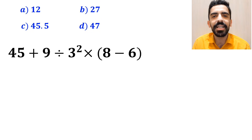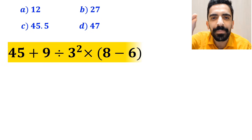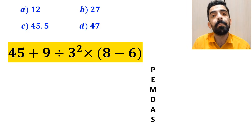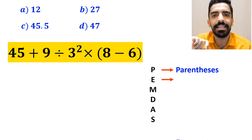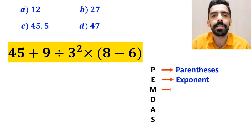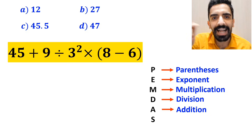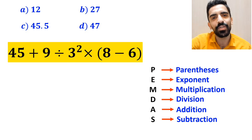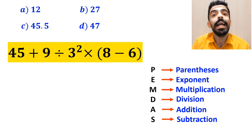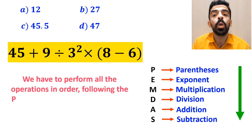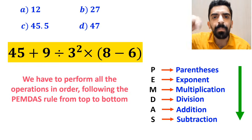Now let me explain step by step how to solve this expression properly. To solve this question, we must follow the PEMDAS rule step by step. In this rule: P stands for Parentheses, E stands for Exponent, M stands for Multiplication, D stands for Division, A stands for Addition, and S stands for Subtraction. It means we have to perform all the operations in order following the PEMDAS rule from top to bottom.